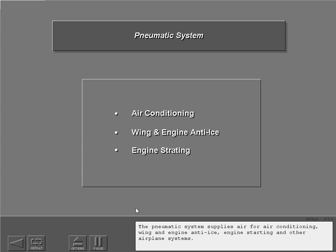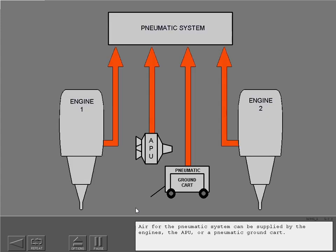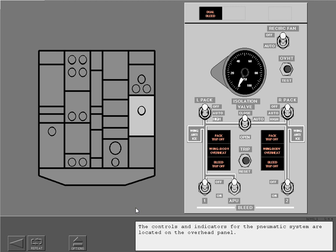The pneumatic system supplies air for air conditioning, wing and engine anti-ice, engine starting, and other airplane systems. Air for the pneumatic system can be supplied by the engines, the APU, or pneumatic ground cart. The controls and indicators for the pneumatic system are located on the overhead panel.